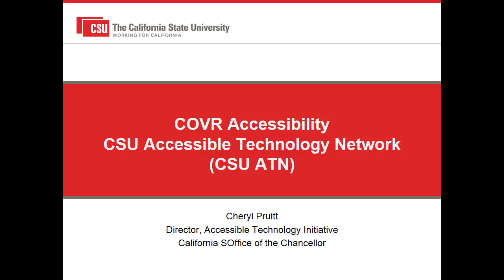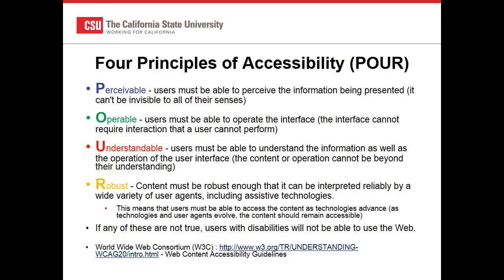Hi. I'm Cheryl Pruitt, Director of the Accessible Technology Initiative at the California State University Office of the Chancellor. Before we jump into the accessibility features of the application, I'd like to say that web accessibility is important to everyone — our accessibility and usability work actually benefits all. The point of web accessibility is to give the greatest number of people, regardless of their method, a chance to interact with the application. There are four principles developed by the World Wide Web Consortium, collectively referred to as the POUR Principles, that need to be true for persons with disabilities to interact with the voter registration application.